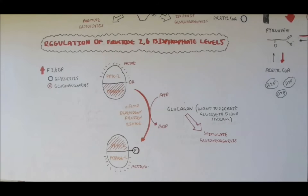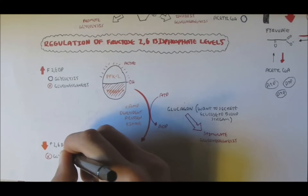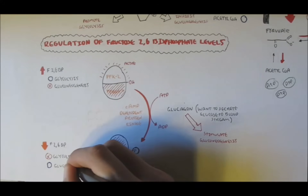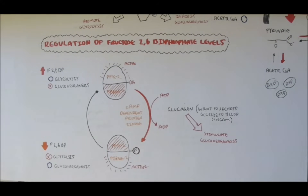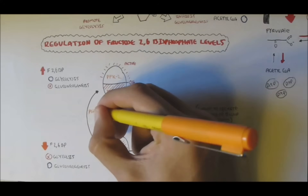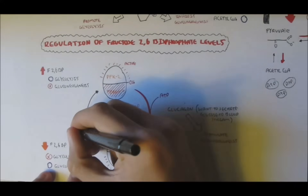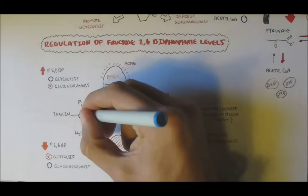The phosphorylated bifunctional enzyme causes fructose bisphosphatase 2 to become active and inhibits phosphofructokinase 2. When phosphofructokinase 2 becomes inactive and fructose bisphosphatase 2 becomes active, fructose 2,6-bisphosphate levels will drop, because fructose bisphosphatase 2 will convert fructose 2,6-bisphosphate to fructose 6-phosphate. Decreased amounts of fructose 2,6-bisphosphate will decrease glycolysis and stimulate gluconeogenesis. If fructose 2,6-bisphosphate levels drop too low, the bifunctional enzyme will be dephosphorylated by hydrating it to remove the inorganic phosphate, done by the enzyme phosphoprotein phosphatase.